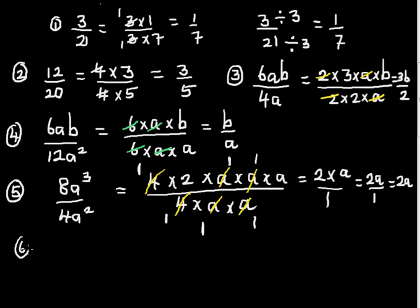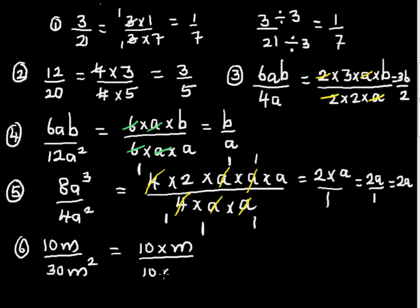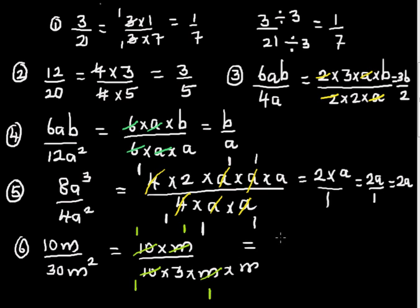What will happen if it is 10m divided by 30m squared? This is the same as 10 times m divided by 10 times 3 times m times m. The 10s cancel and the m's cancel. What remains in the top is 1, and what remains in the denominator is 1 times m. So the final answer is 1 over m.